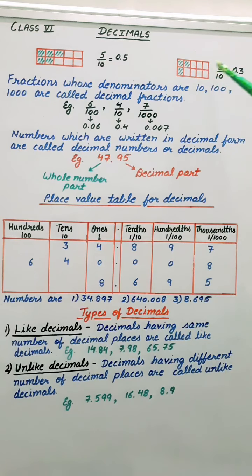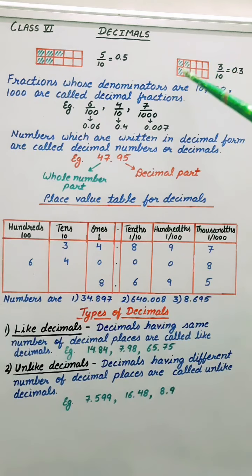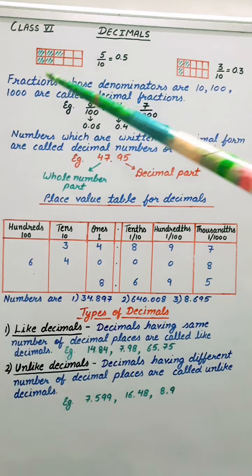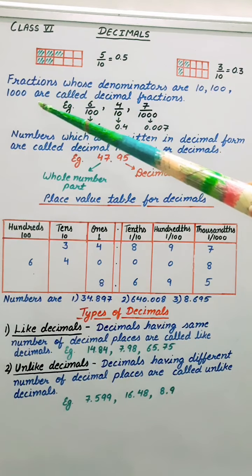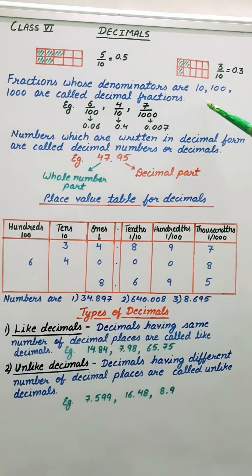Here also out of 10 equal parts, 3 parts are shaded. So it can be written as 3 by 10. So fractions whose denominators are 10, 100 or 1000, they are called decimal fractions.